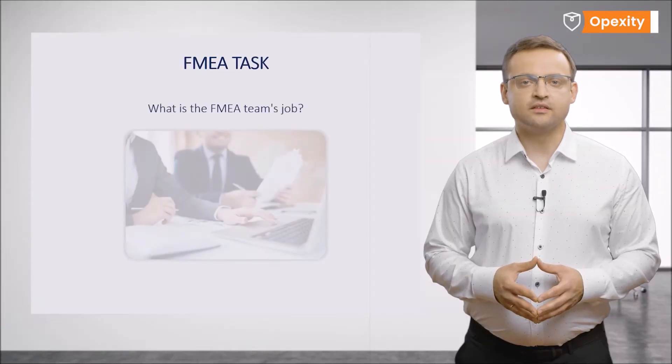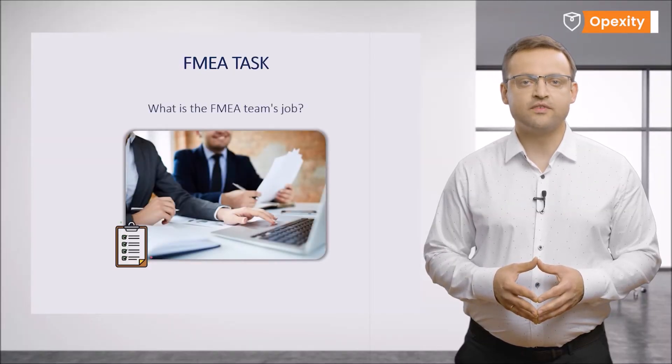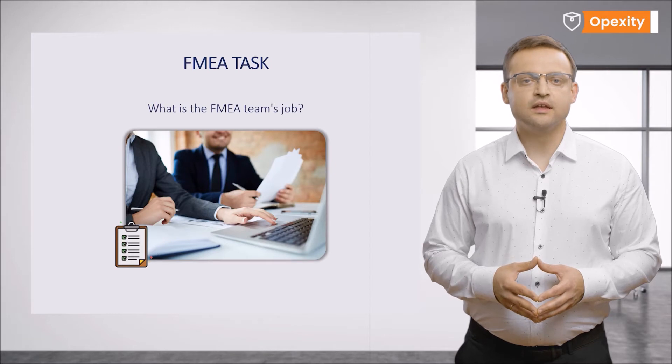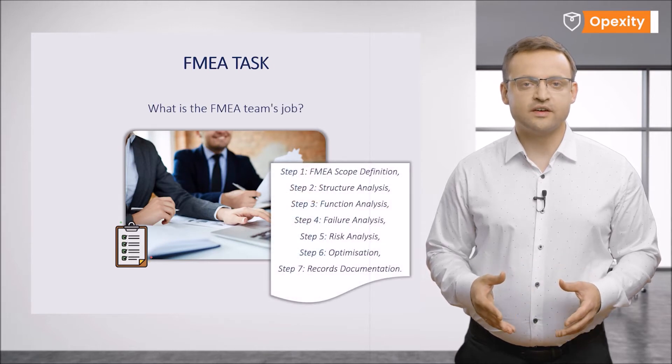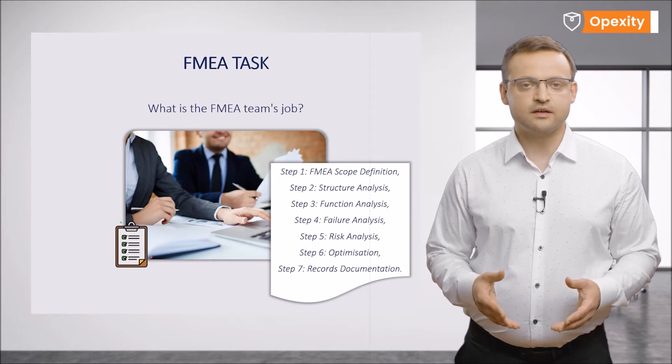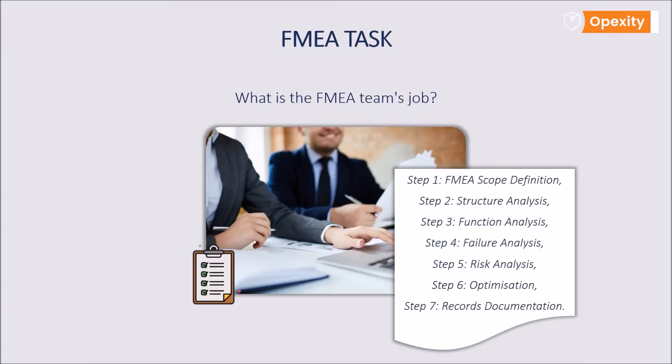The current FMEA analysis is a clearly understood method with the following 7-step approach. Step 1: FMEA Scope Definition. Step 2: Structure Analysis. Step 3: Function Analysis. Step 4: Failure Analysis. Step 5: Risk Analysis. Step 6: Optimization. Step 7: Results Documentation.